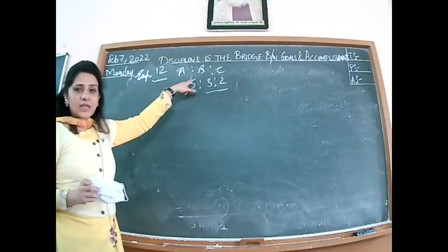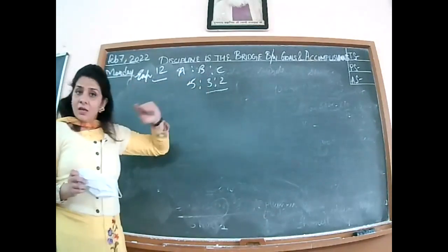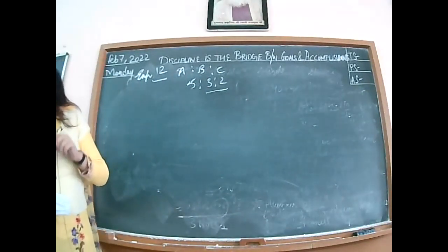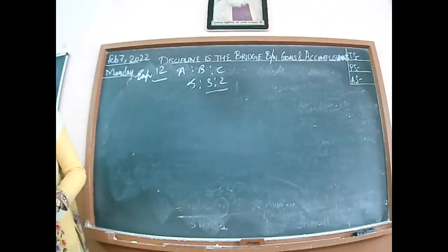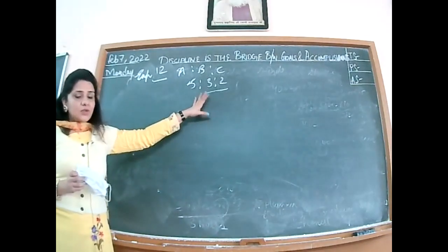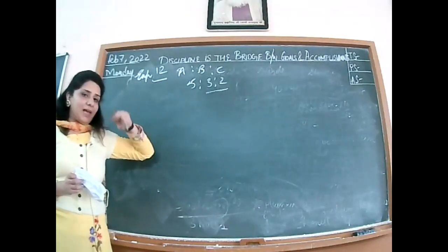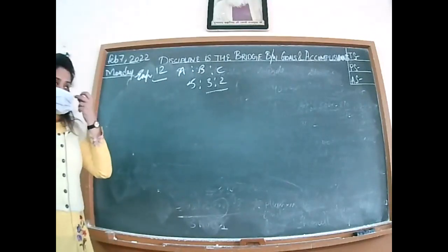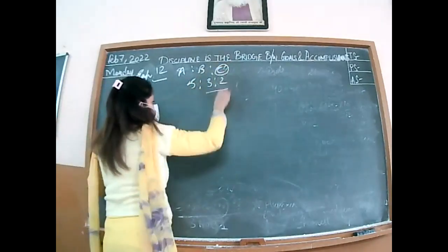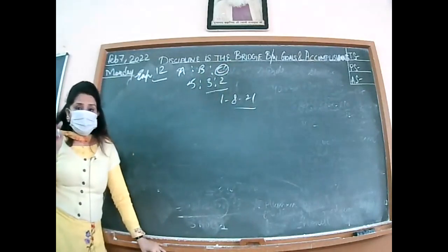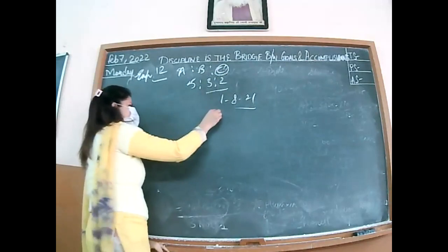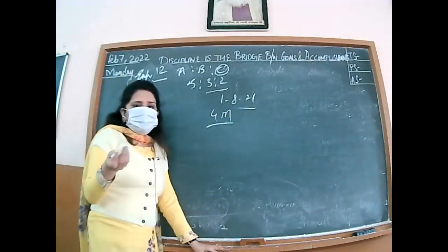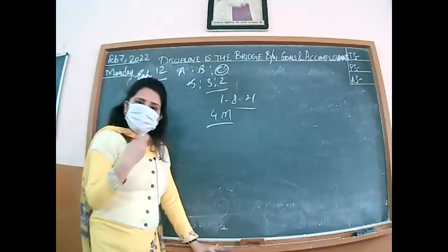When old goodwill appears in our books, the entry to write it off: A debit, B debit, C debit to Goodwill. C is dying, date of death is 1st August 2021. Accounts close on 31st March 2021. So C was a partner from 1st April to 31st July — 4 months. All profit-related calculations will be for 4 months. For goodwill, we never consider time period — only multiply by share. For share of profit, multiply by both time and share.